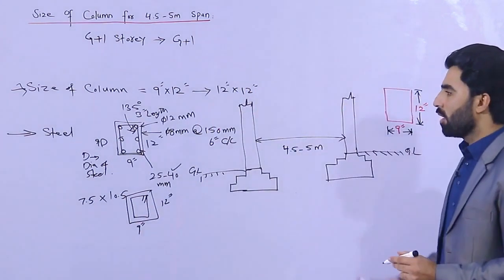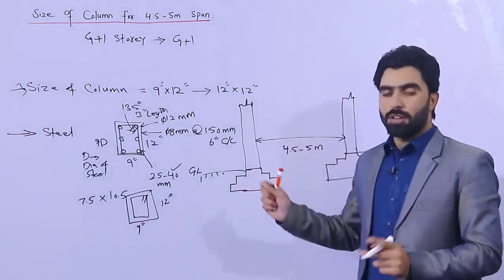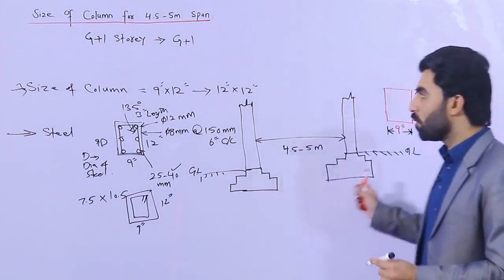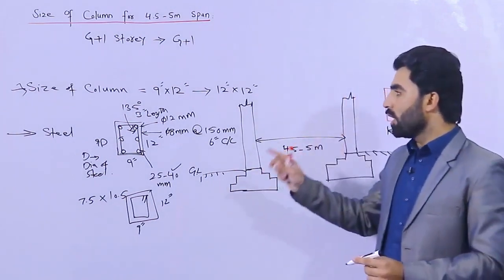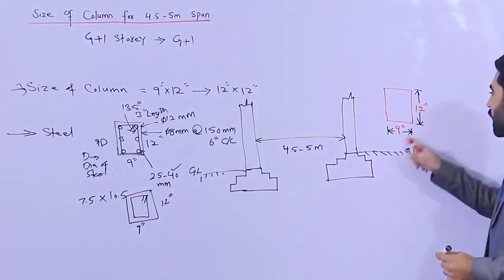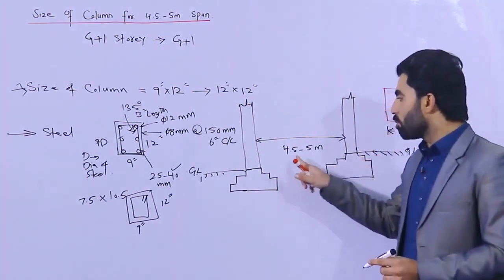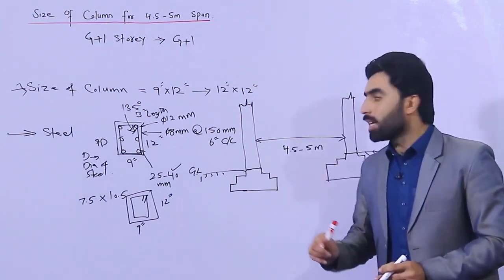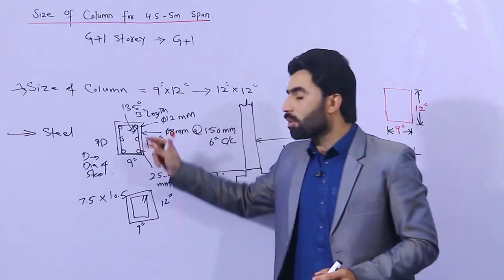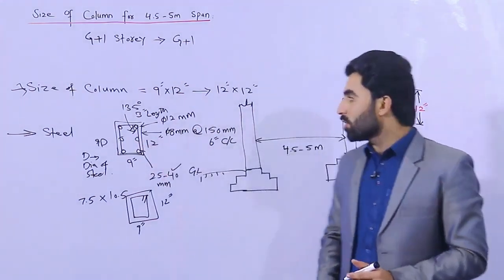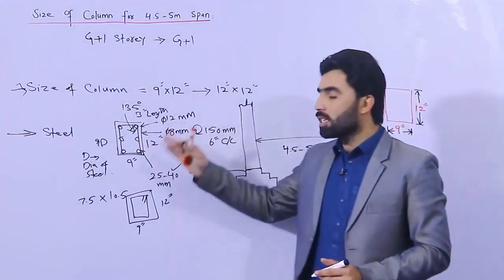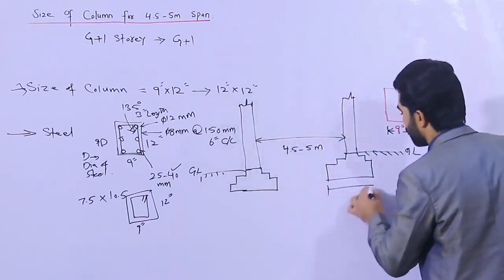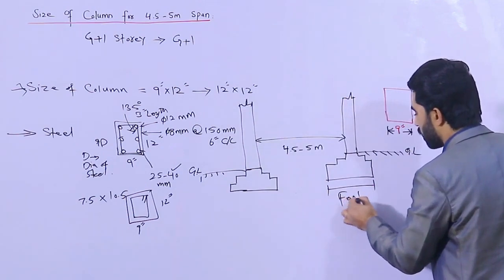It is very easy to know about size of column once you understand the structural drawings. If you are going for G plus one storey and the span is 4.5 to 5 meters, the size of column should not be less than 9 by 12 inches. If you have more than 5 meter span, you cannot use this size — you will need to increase both the steel reinforcement and the column size.